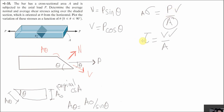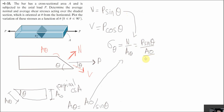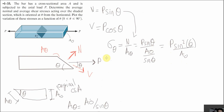Now we have found the force components N and V, and we have found the value of the area, so we can evaluate the stresses. The normal stress in area theta will be N over A_theta. Substituting the values, we have P sine theta over A divided by sine theta, so the average normal stress in the inclined section will be P sine squared theta over the original area A.